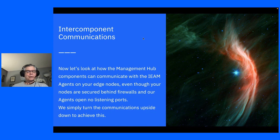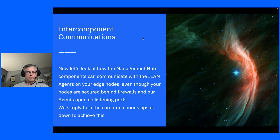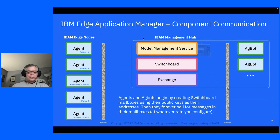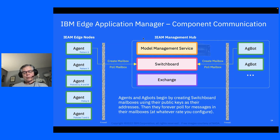Let's look at how the management hub components communicate with agents on the edge node, even though they're behind firewalls and our agents open no listening ports. Unlike competitors' software where the central hub communicates with agent software or SSHes into nodes, we do it the opposite way — we turn communications upside down and the agents always reach out. The agents and AgBots both begin by creating switchboard mailboxes using their public keys as their addresses, and then they will forever poll for messages in their mailboxes at whatever rate you configure.